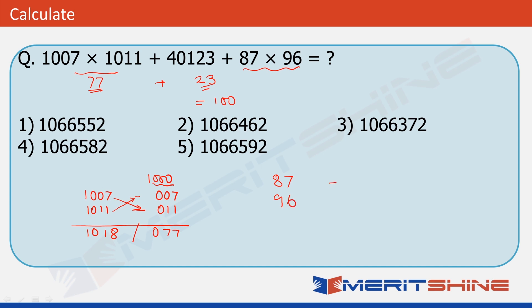It would be 87 into 96. Again, this is minus 13 and minus 04. That is, it is less than our chosen base 100. Now, 13 into 4 is 52. Negative, negative, positive. So, we have a plus 52 here. And 87 plus minus 4 will give us 83.